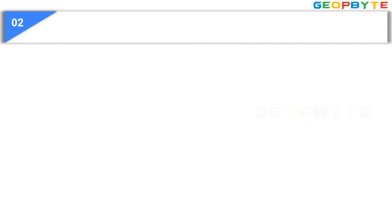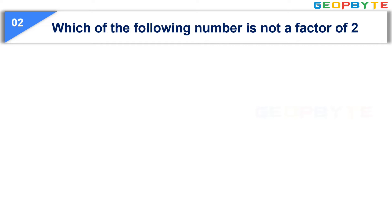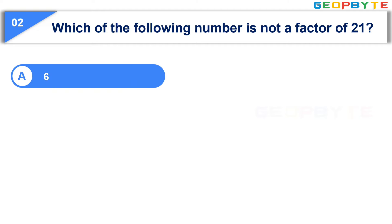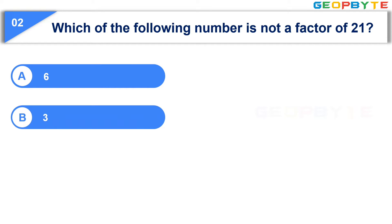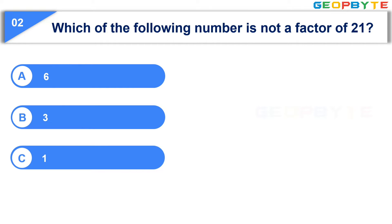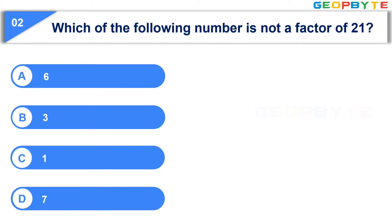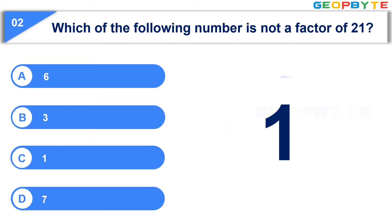Moving to the second question: Which of the following numbers is not a factor of 21? Option A: 6, Option B: 3, Option C: 1, Option D: 7. Your time starts now. Your time is up and the correct answer is Option A, 6.